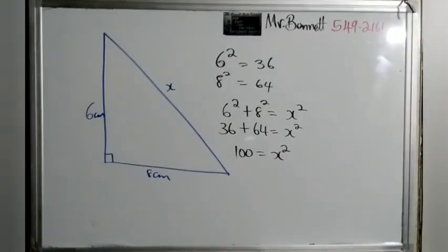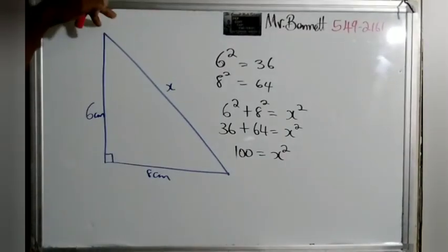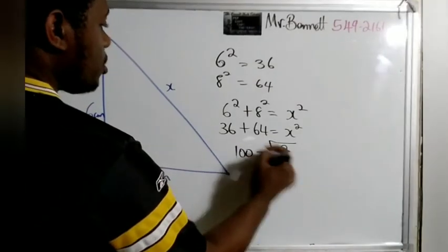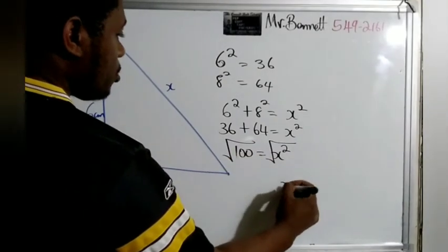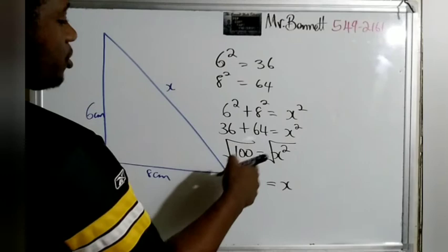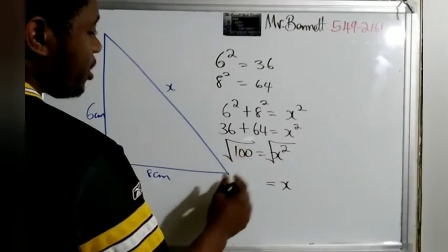Just like what we did with the 5 when we got 25, it's as if we find the square root. Now we have to find the square root.